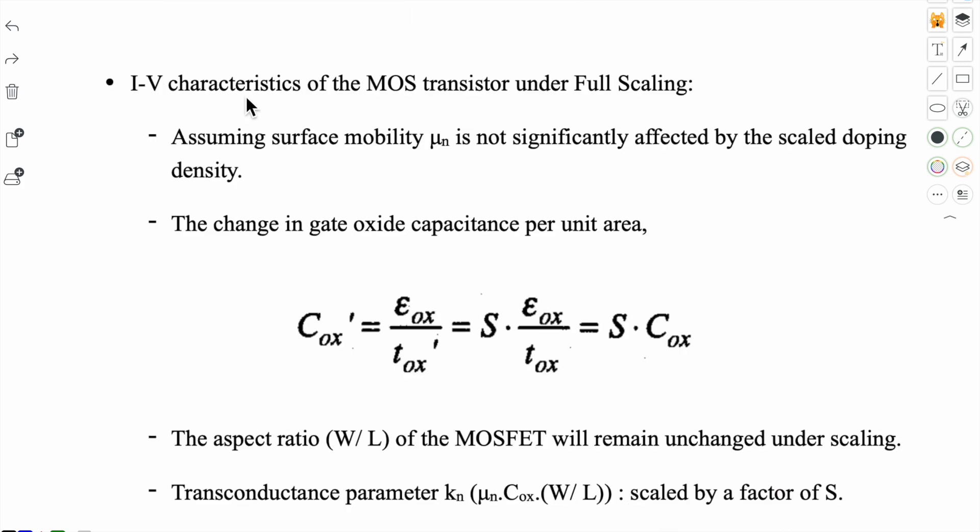Now let's see how this full scaling will affect the drain current in linear and saturation mode of operation. Here we take one assumption, that the surface mobility mu_n is not significantly affected by the scaled doping density. So first one is the gate oxide capacitance per unit area. Its formula is epsilon_ox upon t_ox. So this new gate oxide capacitance per unit area will be S times the previous one. Because thickness is scaled down, it was in denominator, so the whole thing increases.